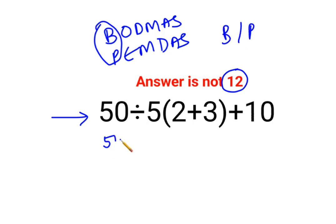So we will keep the rest of the question as it is. And the bracket is what? 2 plus 3 which is 5. And since there is no sign between this 5 and the bracket, it means it is multiplication plus 10.